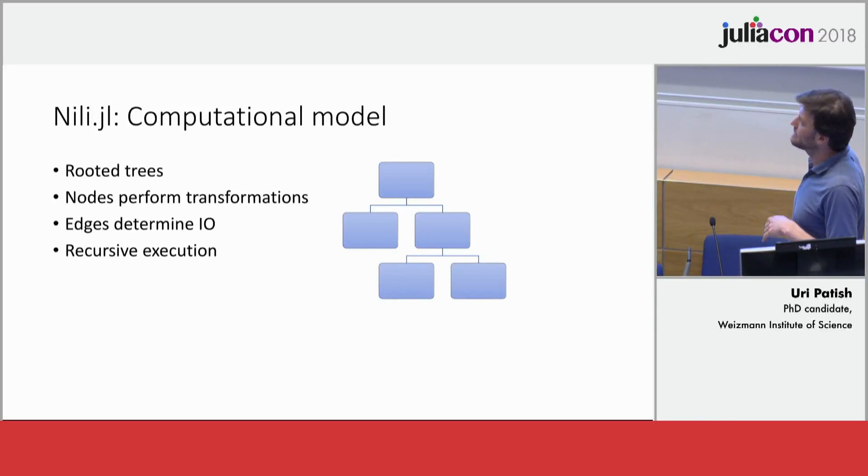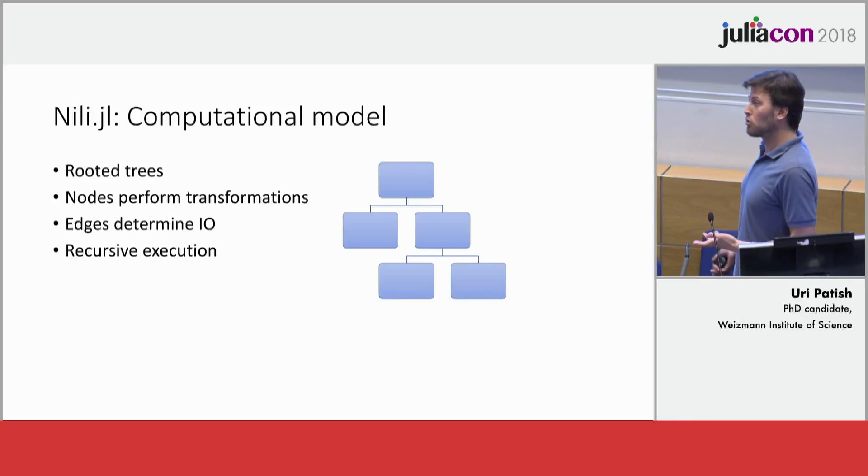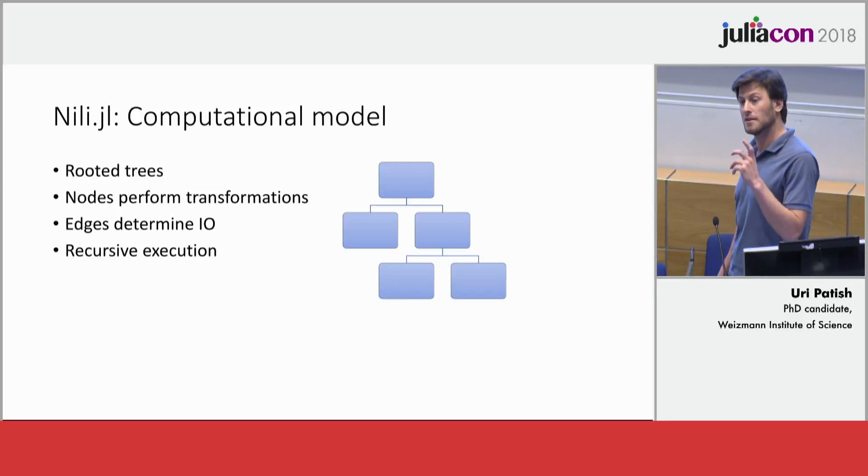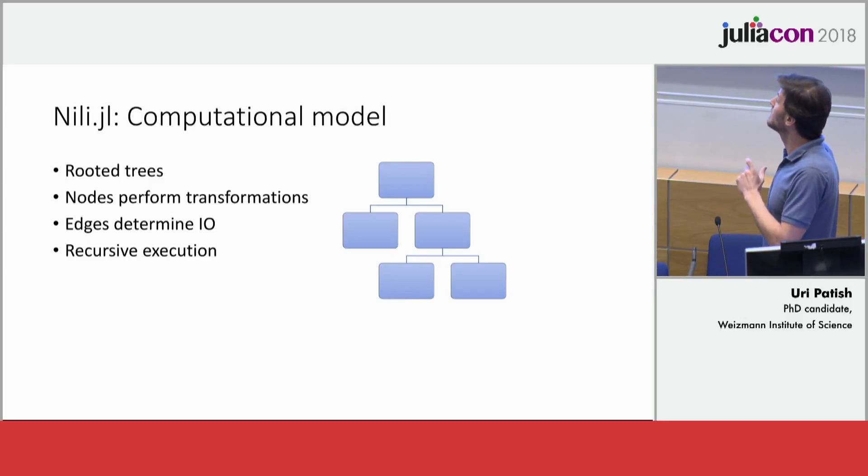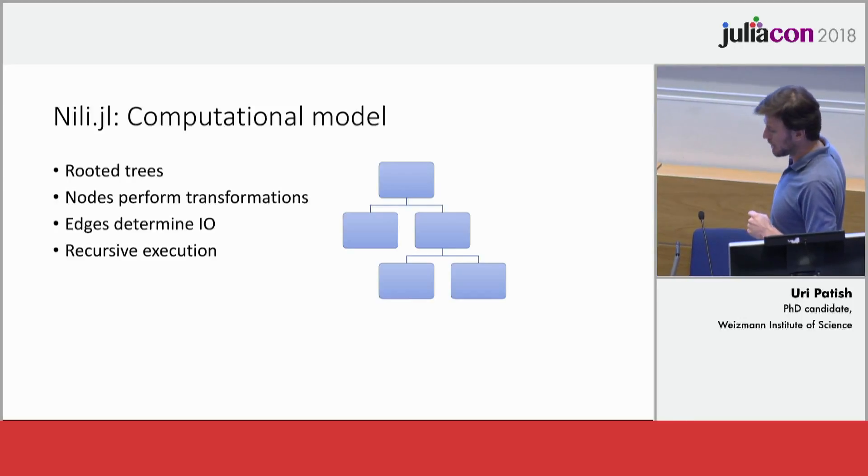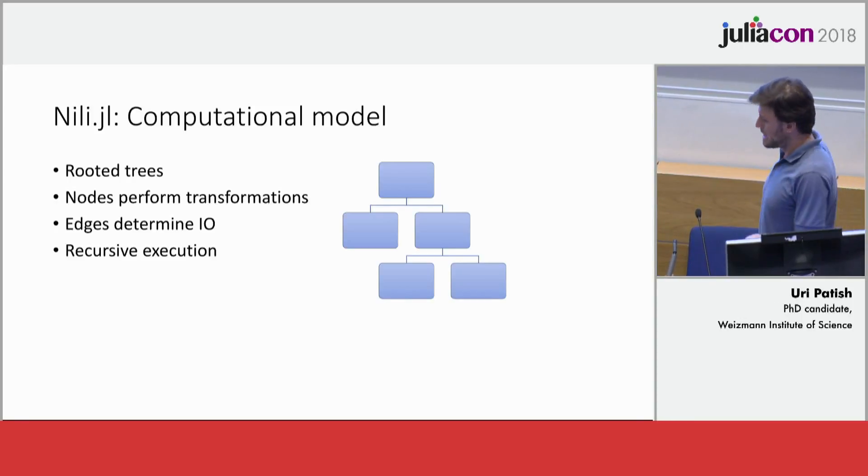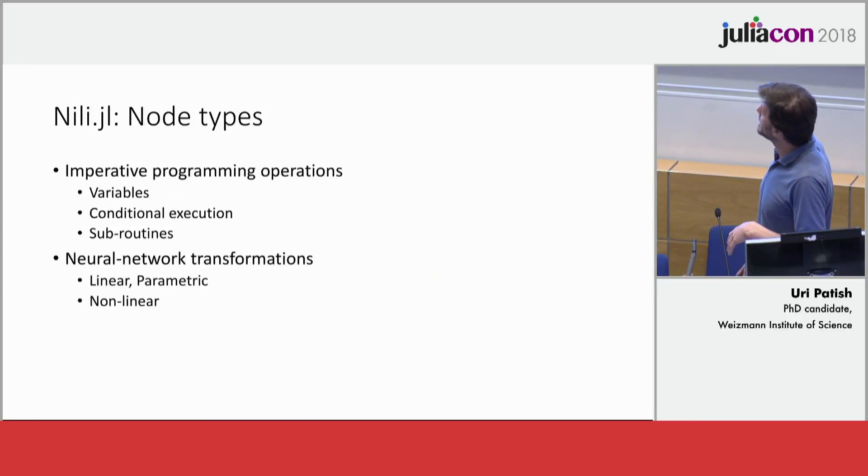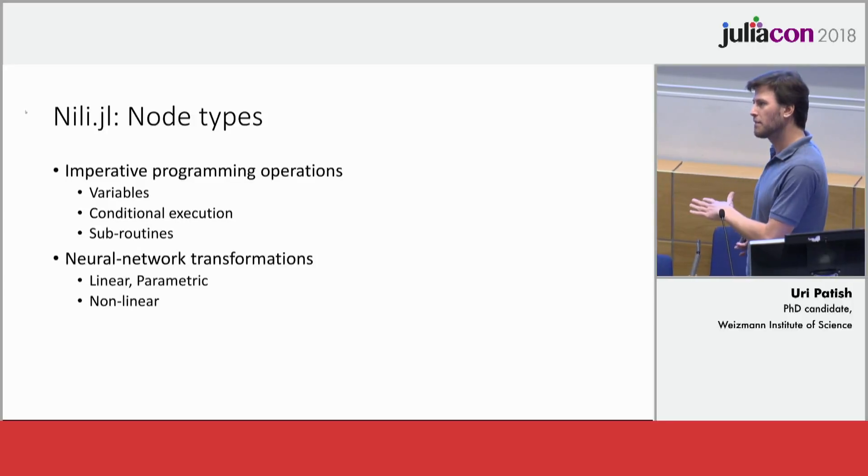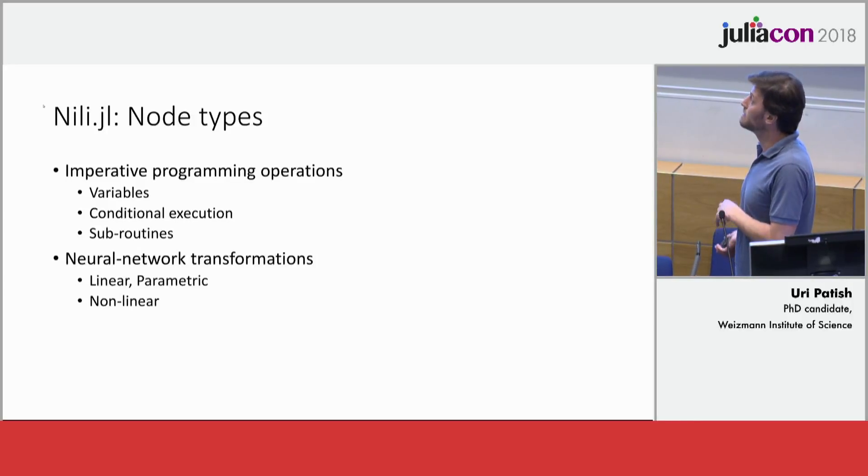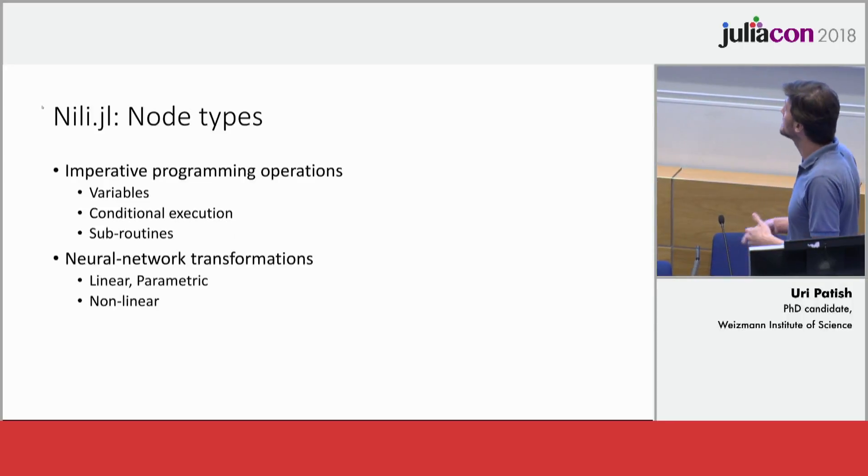I'll just say a few words about the computational model. Basically, programs are rooted trees in the computer science sense. The nodes are the information processing units and the edges determine input-output relationships. When you want to execute a function, there's a recursive execution that goes through the tree in a depth-first order. For the node types, you have imperative programming like defining variables and conditional execution clauses such as if, if-else, and even while loops.